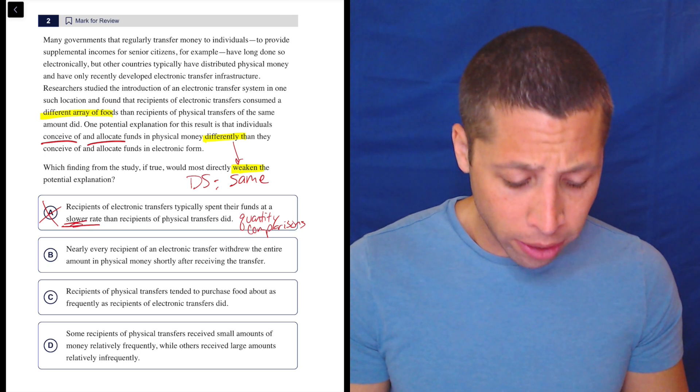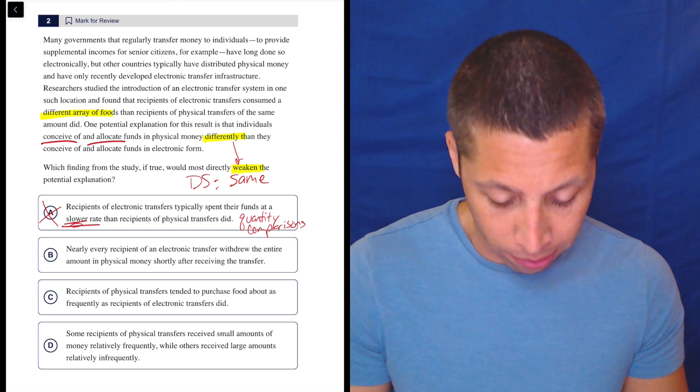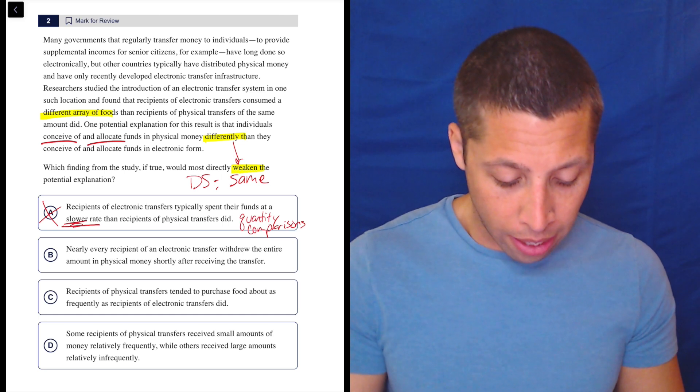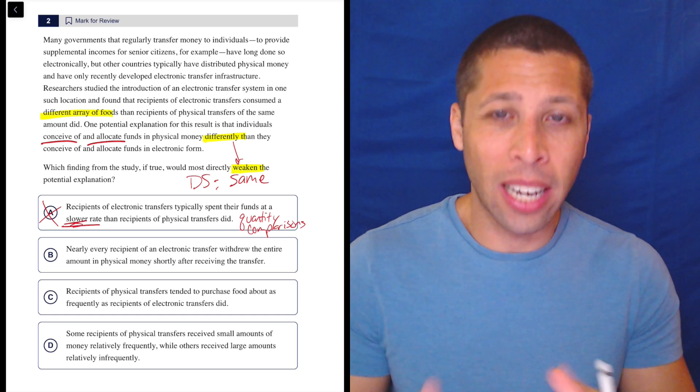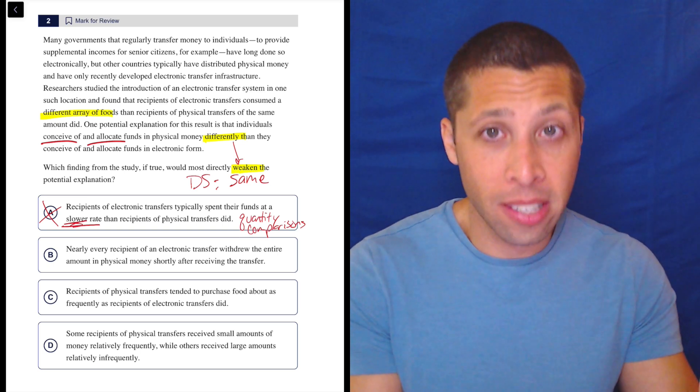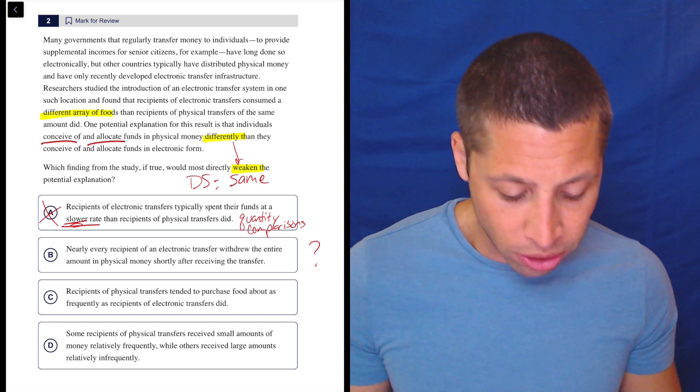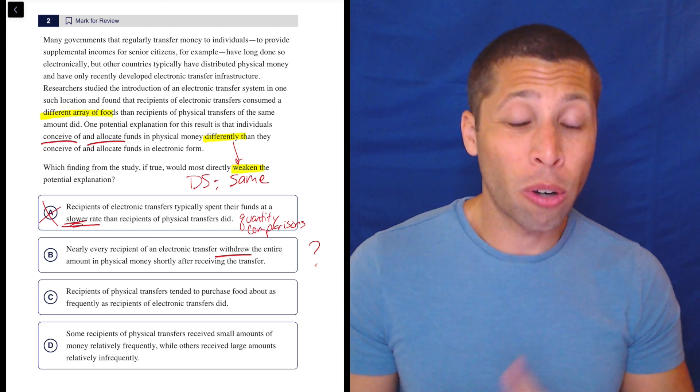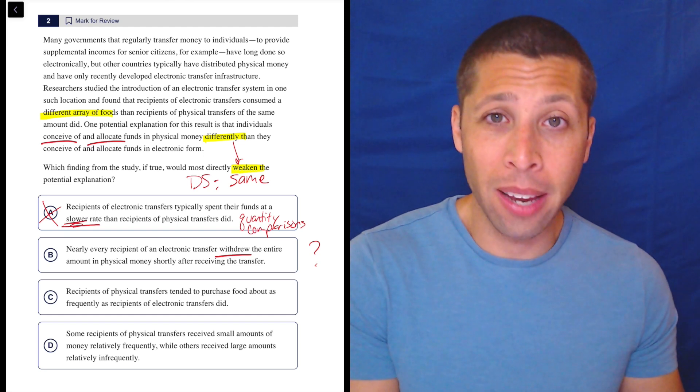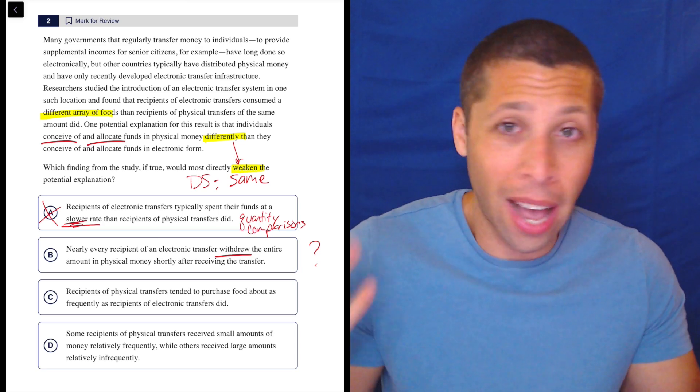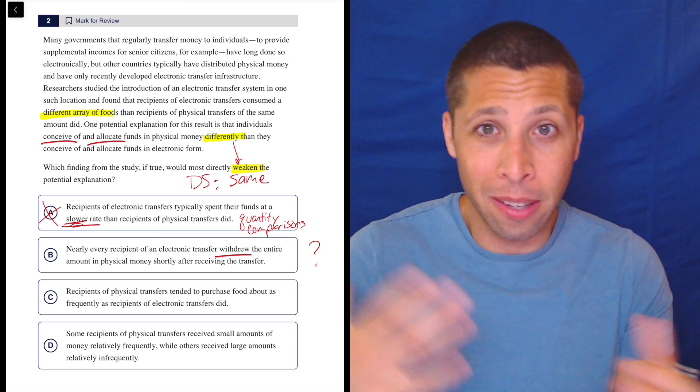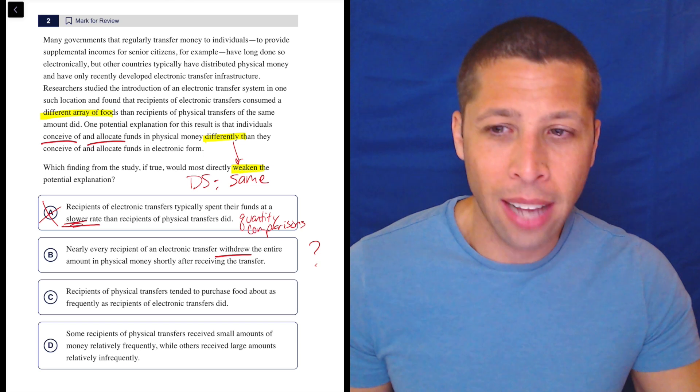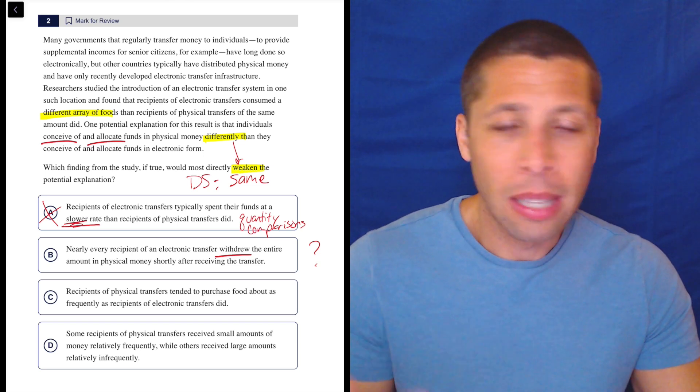B, nearly every recipient of an electronic transfer withdrew the entire amount in physical money shortly after receiving the transfer. To me, this is just like a who cares choice. This just feels kind of random. I don't really have a good reason to get rid of it other than that. But that's not the best kind of reason. I usually love to focus in on a word or a phrase and say, this is my reason to get rid of it. So for that, I don't really understand this. I don't really care about what they withdrew. Like, it just seems random to me. So I wouldn't necessarily cross it out, but it doesn't seem to support my dumb summary here. It just seems like a random thing. So I don't know. Maybe it's the same because the money is the same, whether it's put in electronically or taken out physically. But I'm already doing more work than I probably would on a test about this choice. I would just kind of be like, it's random, let me leave it in. But let me move on.